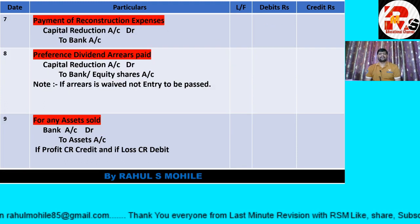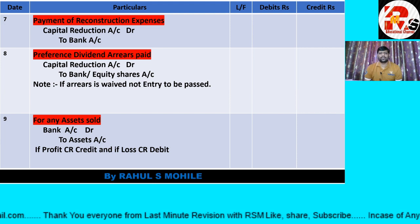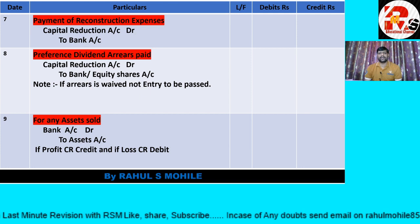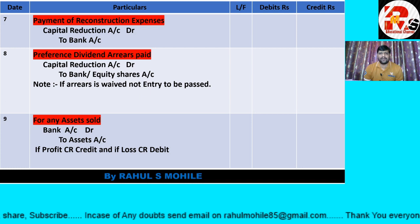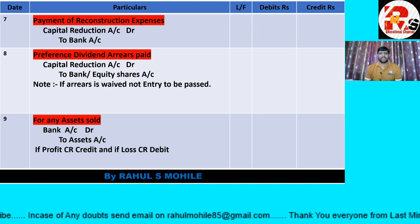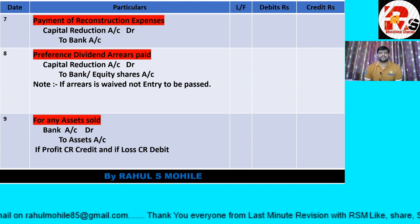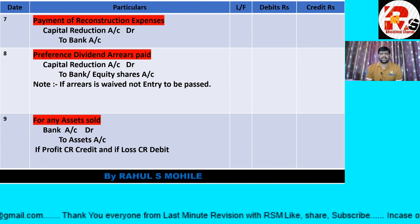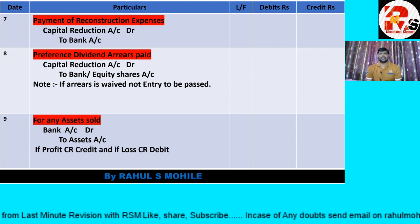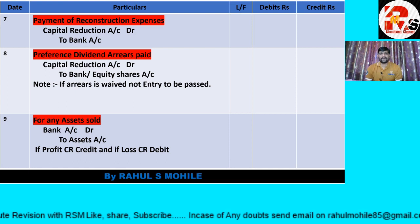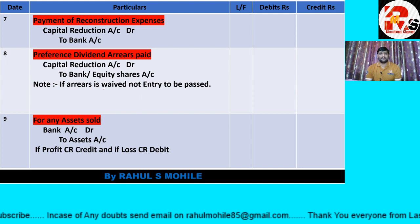Number 7: payment of reconstruction expenses. When any expenses are incurred during reconstruction, the entry is: Capital Reduction debit to Bank. The amount of reconstruction expenses paid will be given in the question.